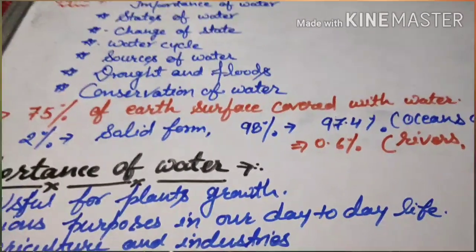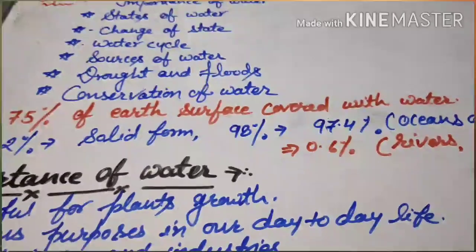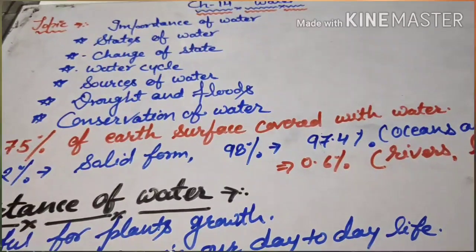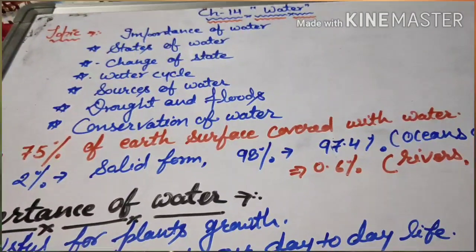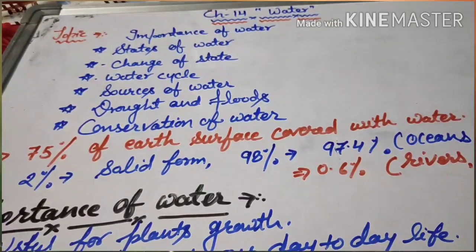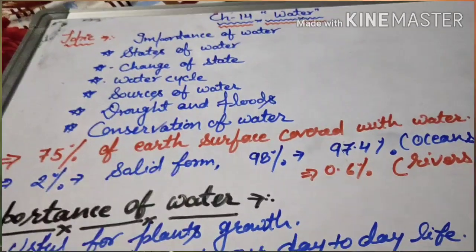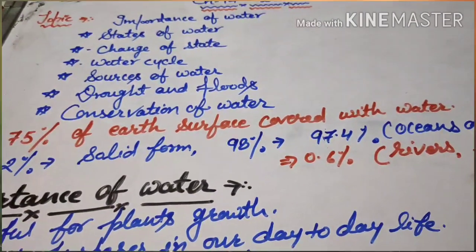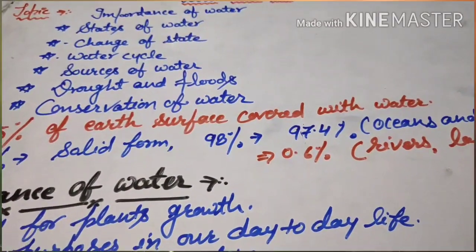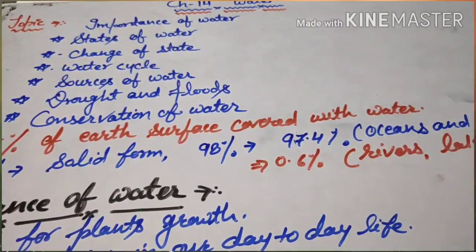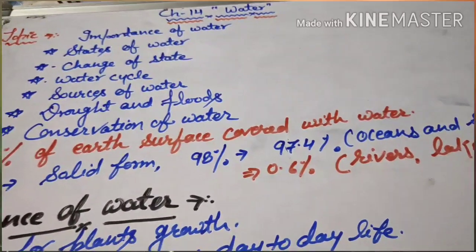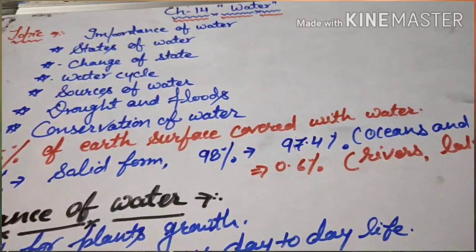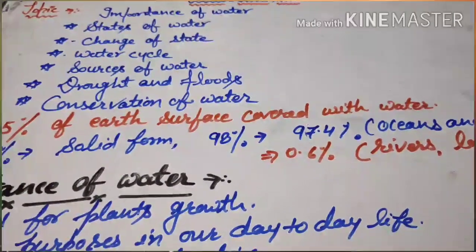The next reason is that the groundwater level is decreasing day by day. This is because of human activities such as deforestation — cutting down of trees — and also because the population is increasing. Groundwater is a source of fresh water that we use for drinking and cooking, so a falling groundwater level is also a major reason for water shortage.